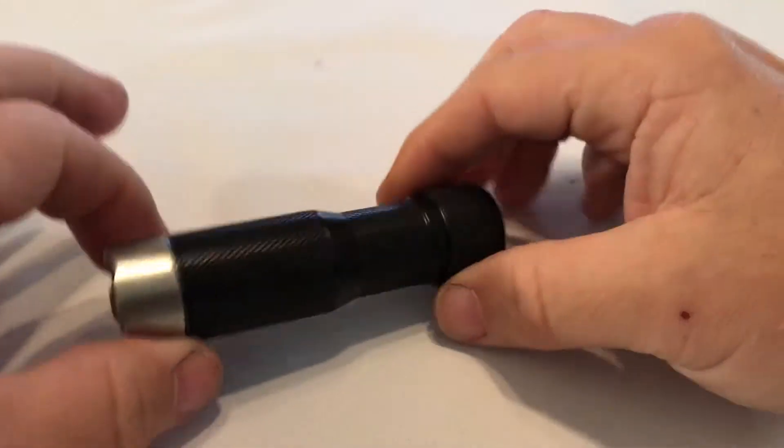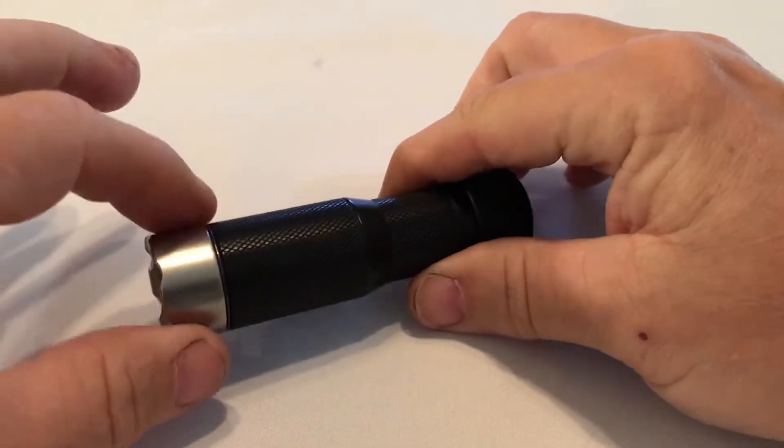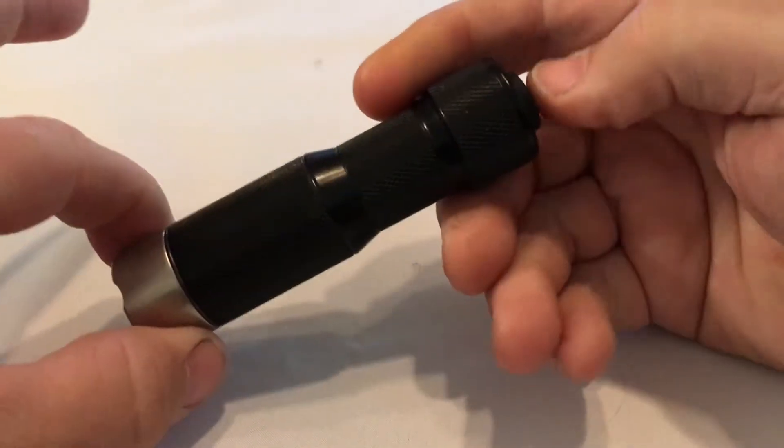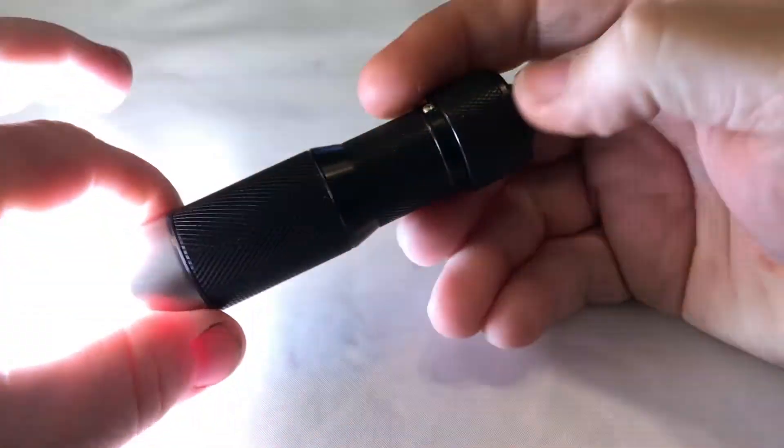Now, when I turn the light off, it's going to remember that it was in preset C. So, when I turn it on, it's at pulsating strobe.